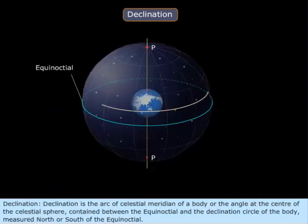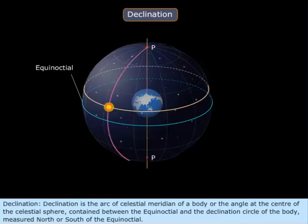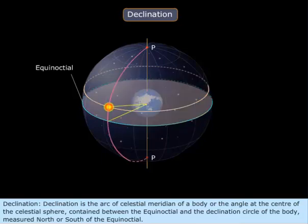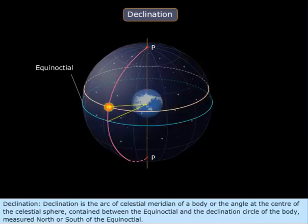Declination. Declination is the arc of the celestial meridian of a body, or the angle at the center of the celestial sphere, contained between the equinoctial and the declination circle of the body, measured north or south of the equinoctial.